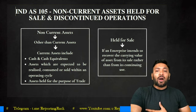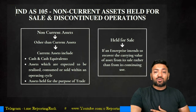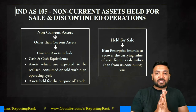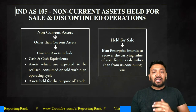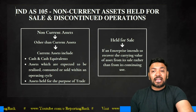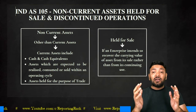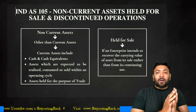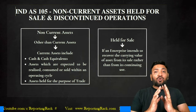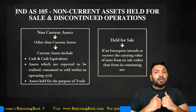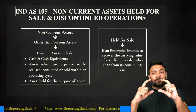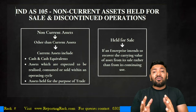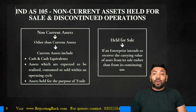Ind AS 105 is predominantly broken down into two parts. The first part deals with non-current assets held for sale, and the second part deals with discontinued operations. Both parts need to be dealt with in a distinguished manner because they have very little in common. Since discontinued operation is a very small standard, it had to be clubbed into a relevant standard, which happens to be Ind AS 105.